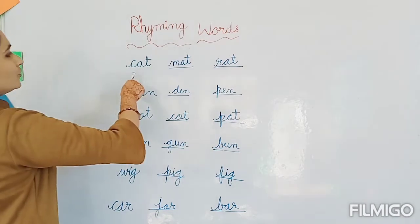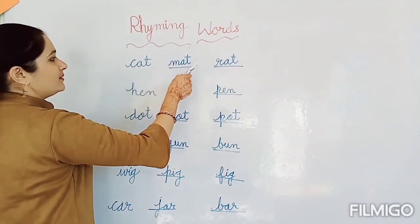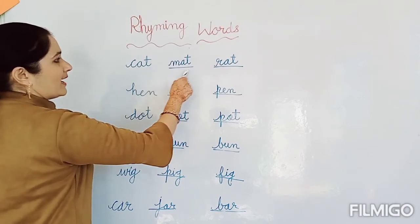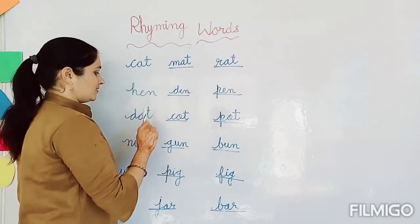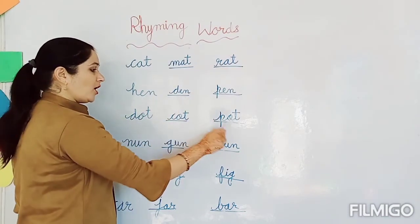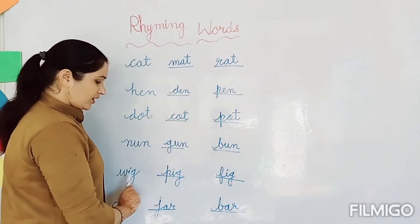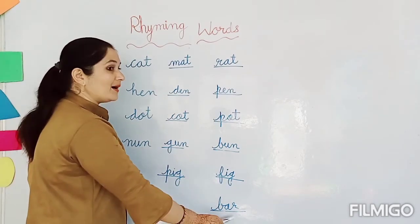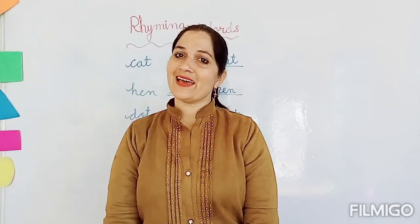So next time, you will write similar sound. And then sound with similar. So that's all rhyming words. Cat. Mat. Rat. Hen. Den. Pen. Dot. Cot. Pot. Nun. Gun. Bun. Fig. Pig. Big. Car. Jar. Bar. Okay, kids? So you will do rhyming words today. Take care. Bye-bye.